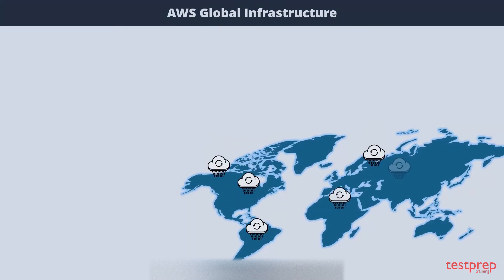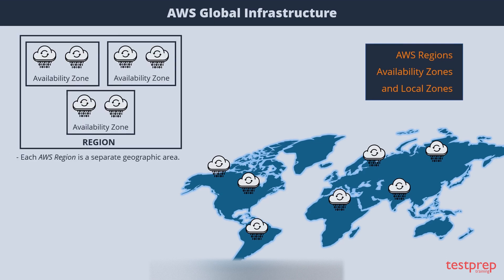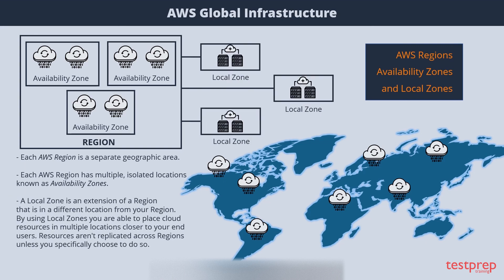Let's now look at the global infrastructure of AWS. AWS cloud resources are hosted in multiple locations worldwide, composed of AWS regions, availability zones, and local zones. Each AWS region is a separate geographic area with multiple isolated locations known as availability zones. By using local zones, you are able to place cloud resources in multiple locations closer to your end users. A local zone is an extension of a region in a different location, ideal for latency-sensitive applications. Resources are not replicated across regions unless you specifically choose to do so.